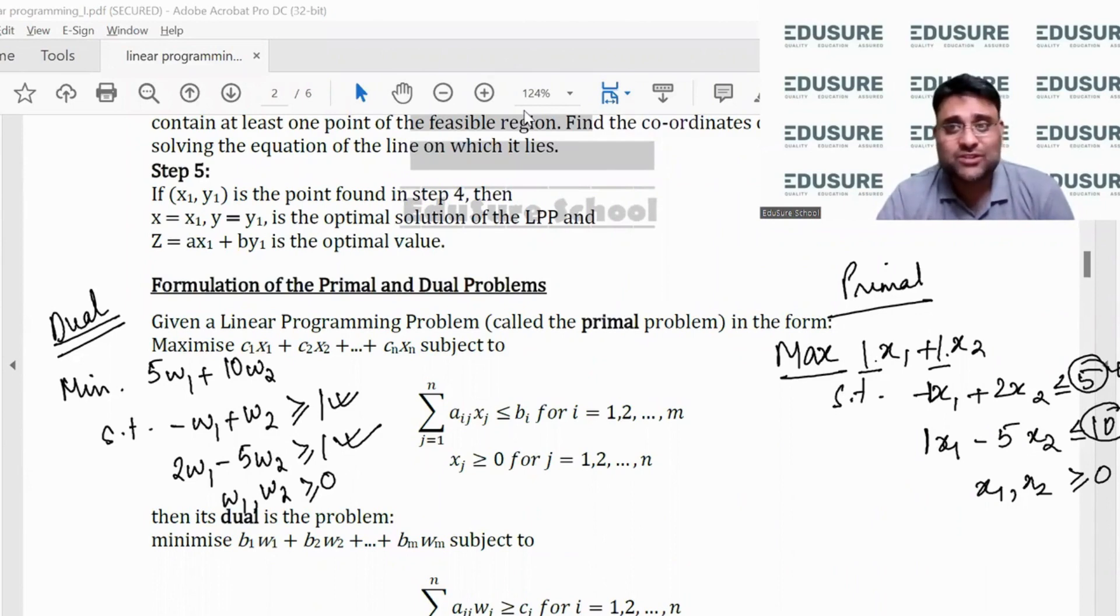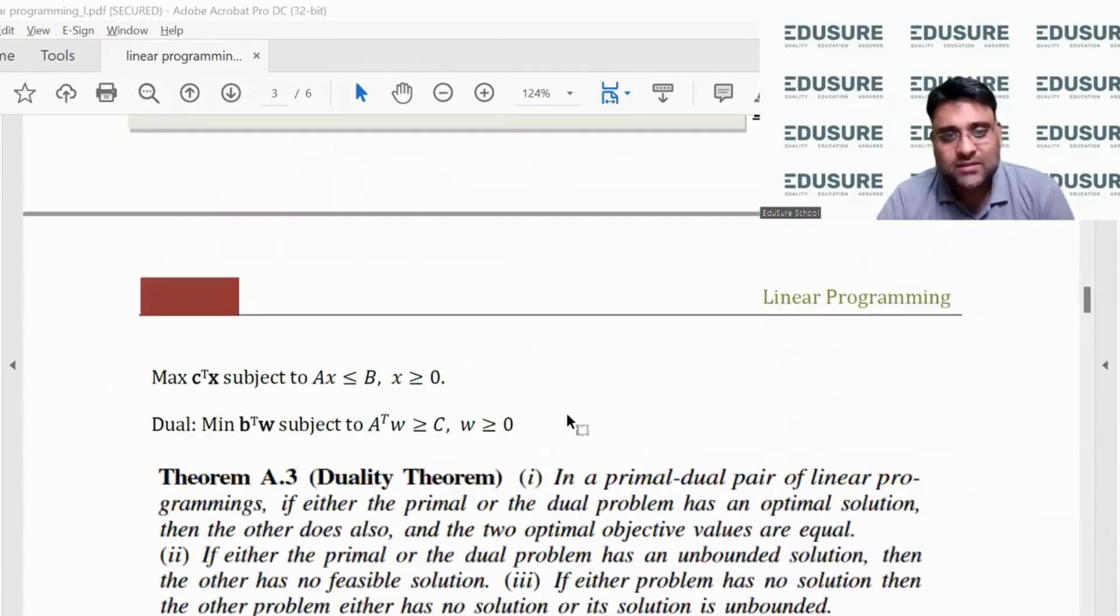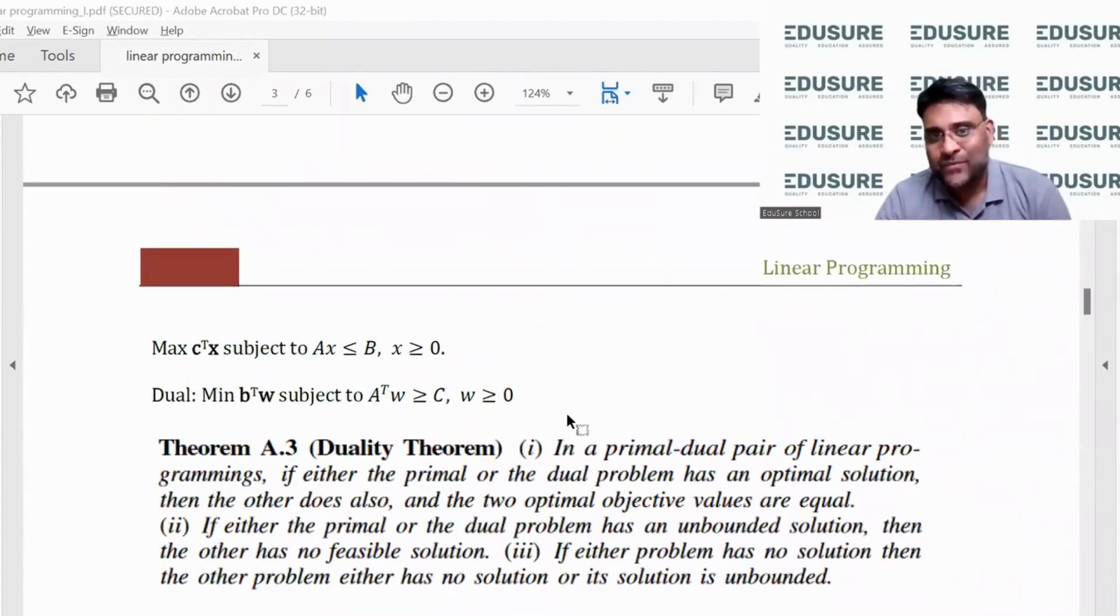What is the relationship between the solution of the primal and the dual problem? The relationship between the solution is here given in the handout. In a primal-dual pair of linear programming, if either the primal or the dual has an optimal solution, then the other will have to have the same optimal solution and the value of the objective function is the same.